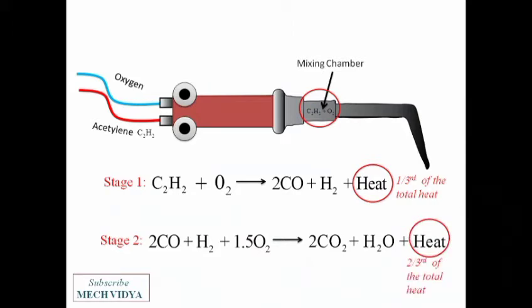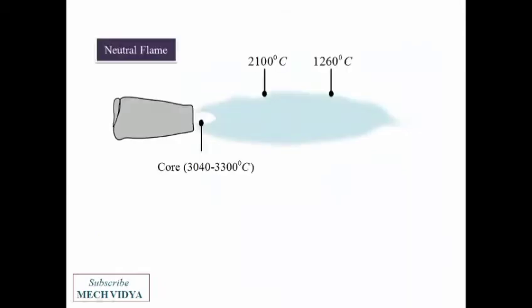Now, by controlling the regulators, we can decide how much oxygen and how much acetylene we want. Based on this, we can have three types of flames. The first one is the neutral flame, where the percentage of oxygen and acetylene inside the welding torch is exactly the same.